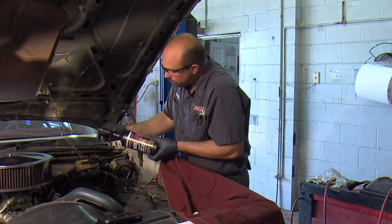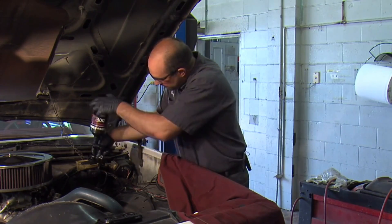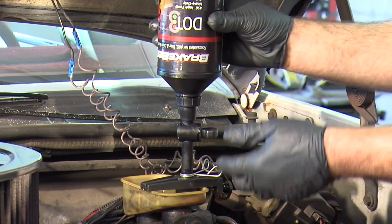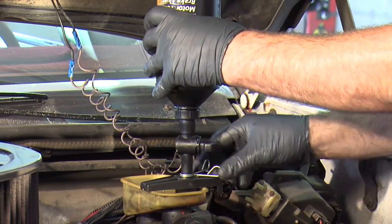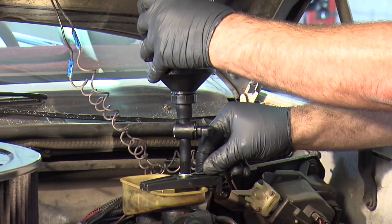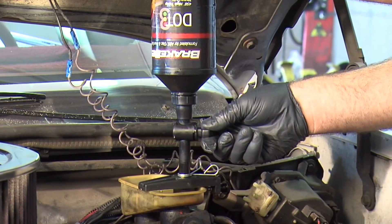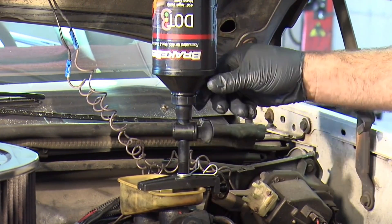It includes a 1.2 litre reservoir that mounts to the top of the master cylinder and clamps securely to the reservoir wall. As old brake fluid is bled from the hydraulic system through the bleeder nipples, new fluid automatically flows into the reservoir to replenish the master cylinder.